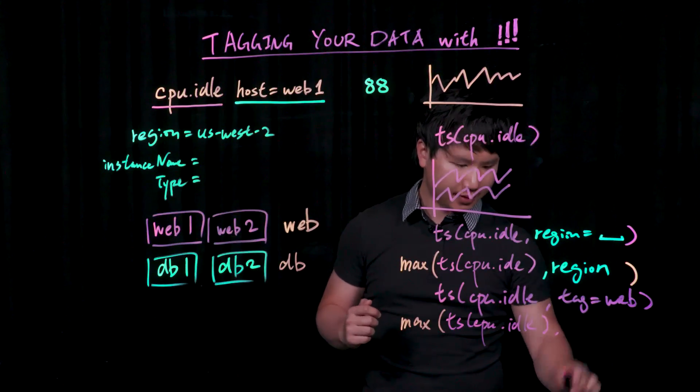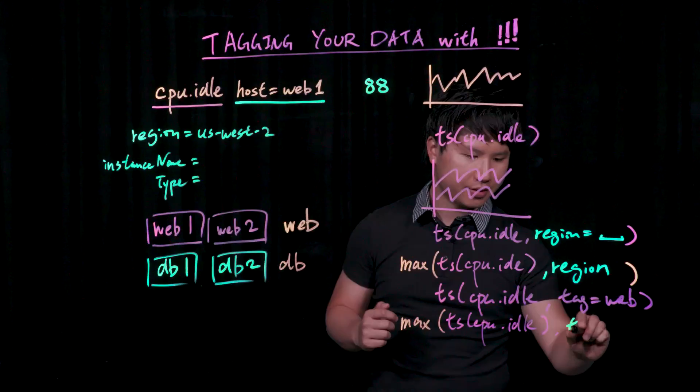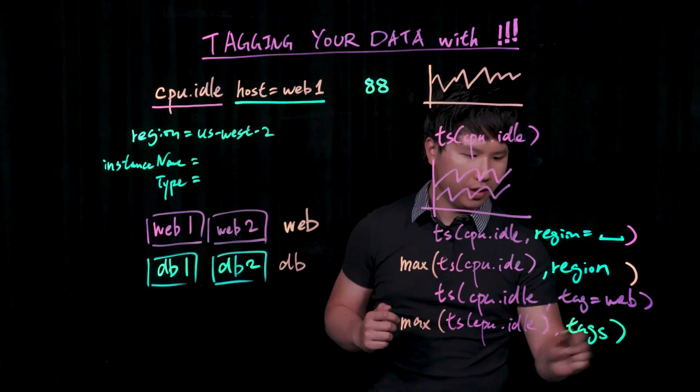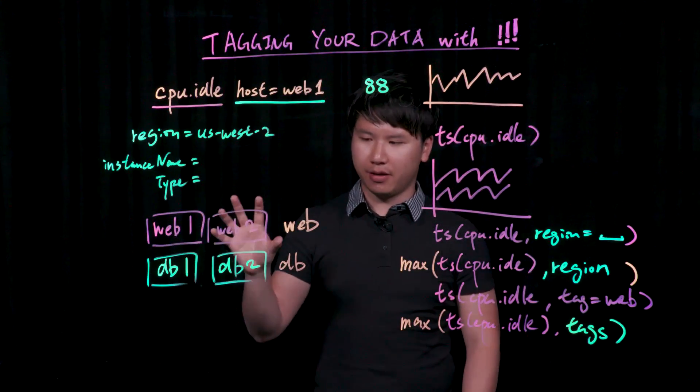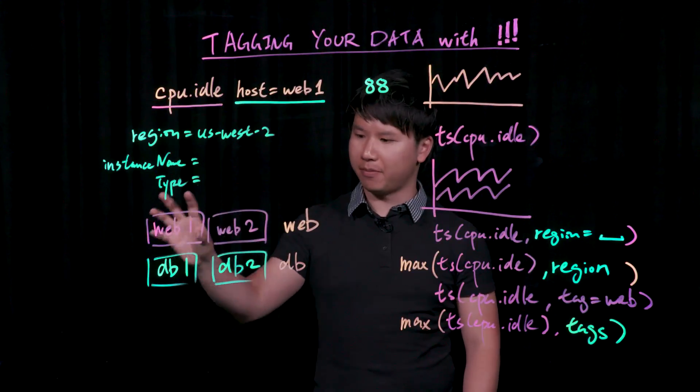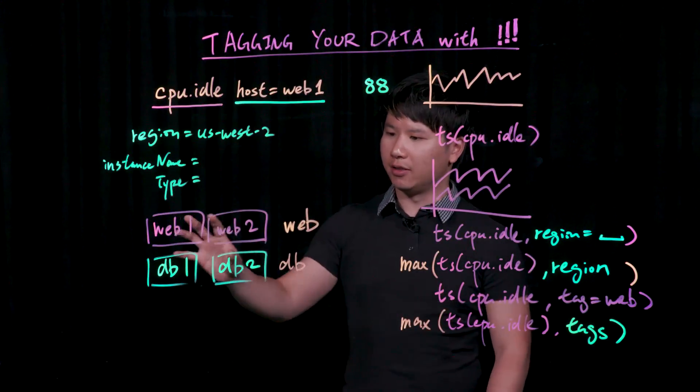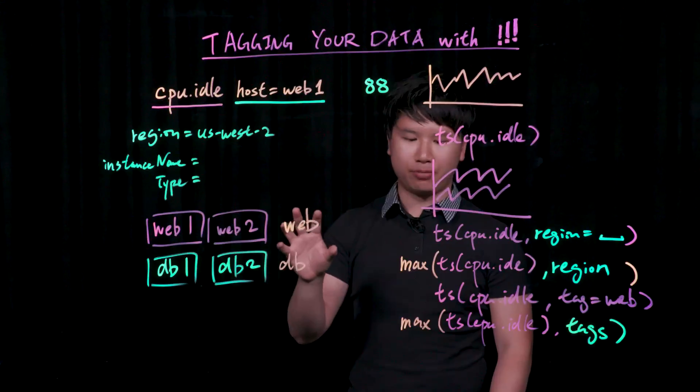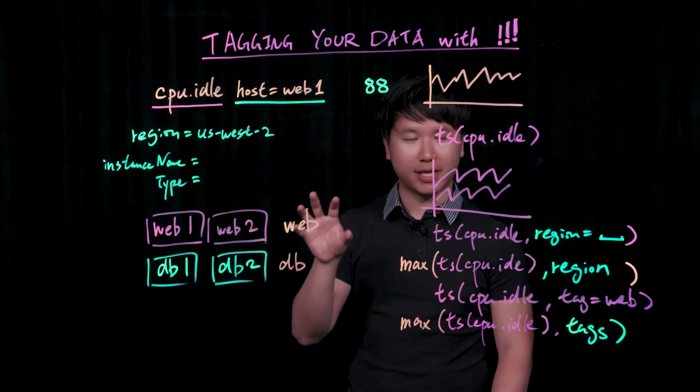And I want to group that by my source tags. And the way to do that is simply to say tags. What that would do is to pull out just the metrics that match CPU idle, look at the source tags that they have, and produce the max across that population.